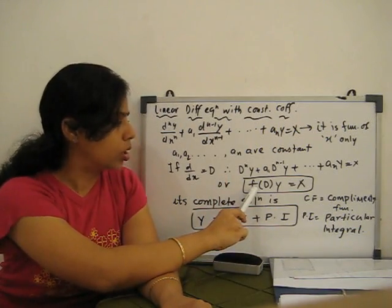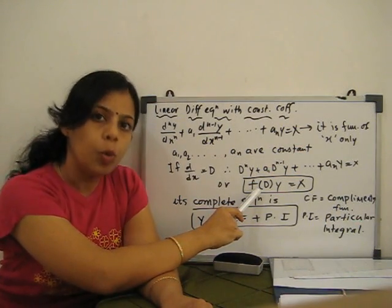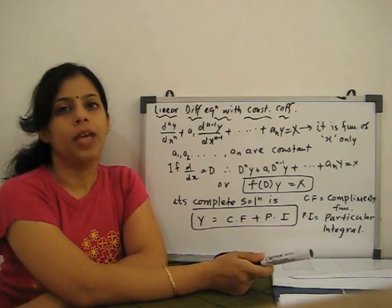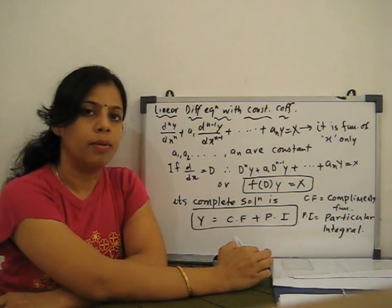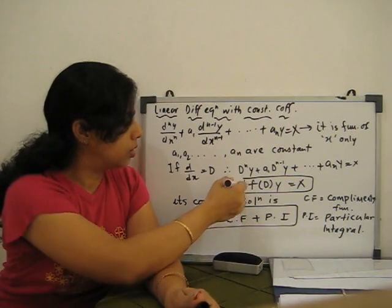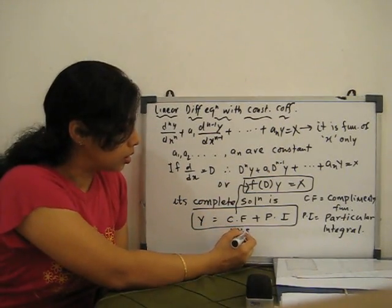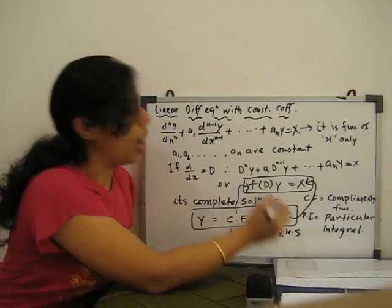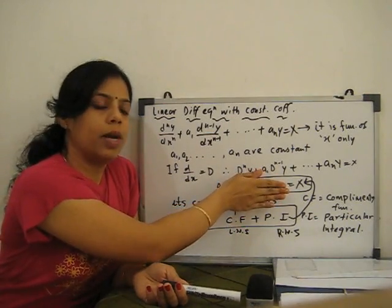The general solution, or complete solution, of this differential equation consists of two parts. The first is CF, the complementary function. The second is PI, the particular integral. So our solution is y = CF + PI. The complementary function is found from the left-hand side, and the particular integral is found from the right-hand side.